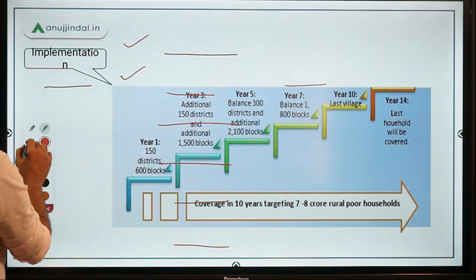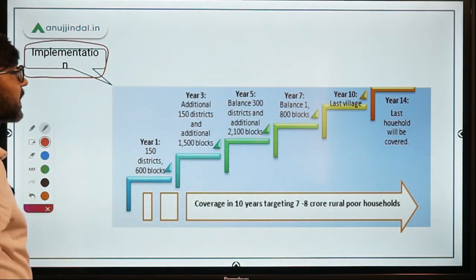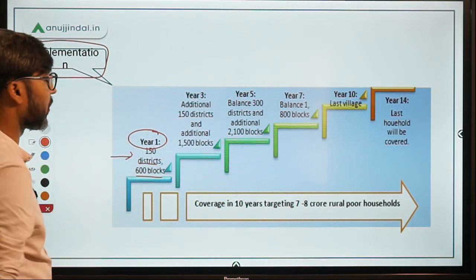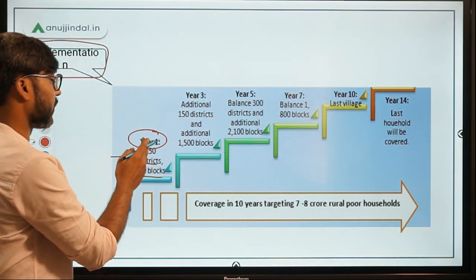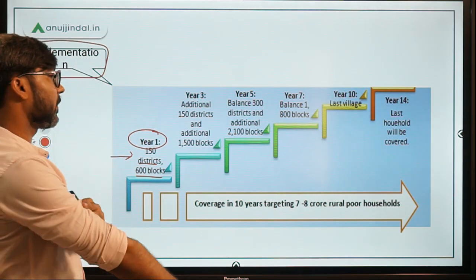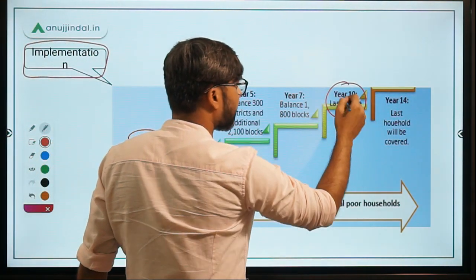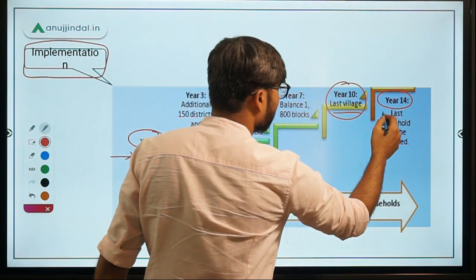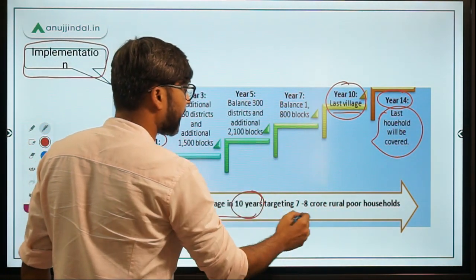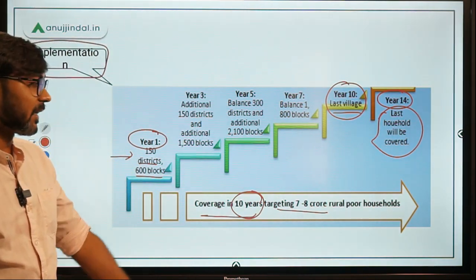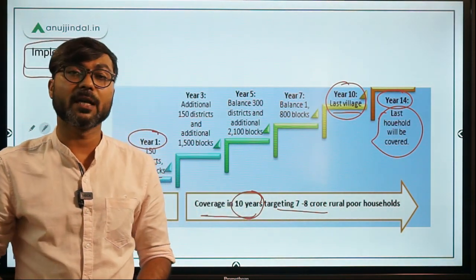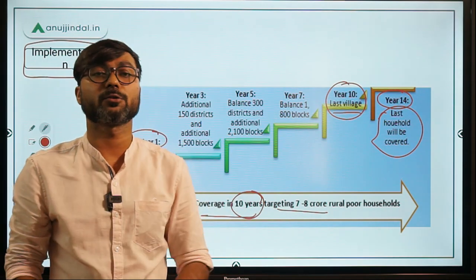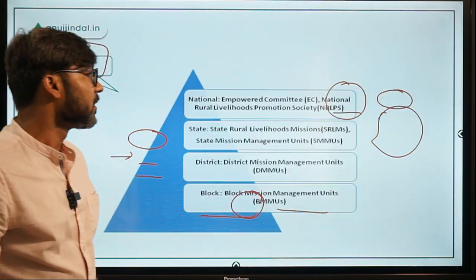Regarding implementation timeline: in the first year, the target was to cover 150 districts and 600 blocks. Gradually, by the 10th year, all villages would be covered, and by the 14th year, the last household would be covered. The overall target was that this mission would cover seven to eight crore rural poor households over 10 years.